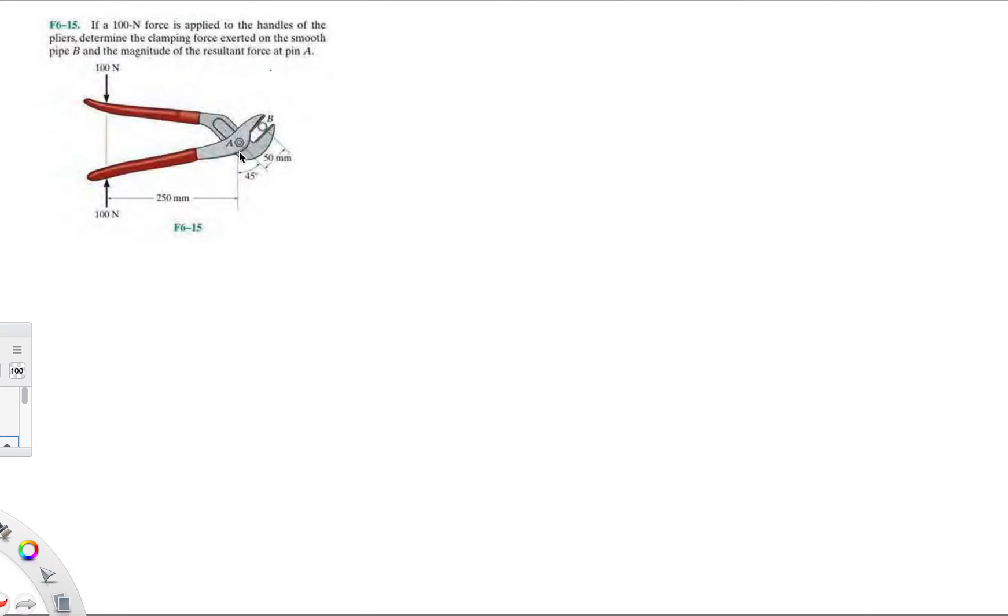We know pin A will have some reaction forces there. There's two choices: you can either look at this part of the plier or you can look at this part of the plier. That's what I'll choose. I'm just going to draw all the forces on this part so I don't have to draw it and make it look really messy.